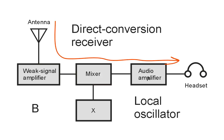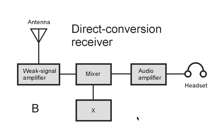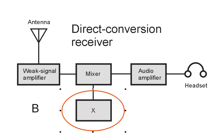This allows us to receive continuous wave, frequency shift keyed signals, and even single sideband signals. So this mixer actually serves the dual role of mixer and detector — it is a primitive form of product detector, which we would use for single sideband reception. The problem with a direct conversion receiver, though, is that we get both sidebands beating in the audio, and when two signals happen to fall equidistant on either side of the local oscillator,